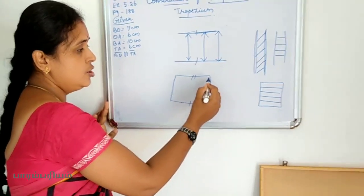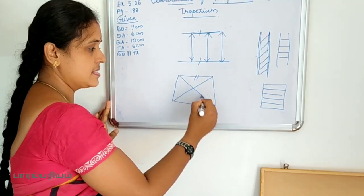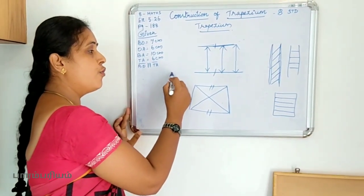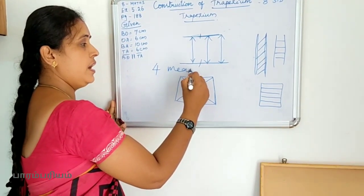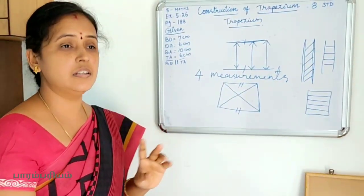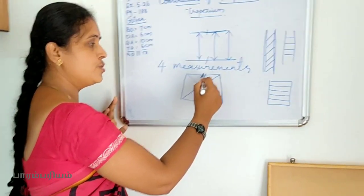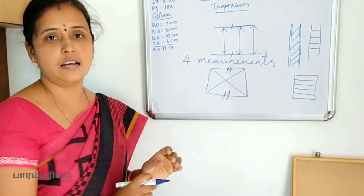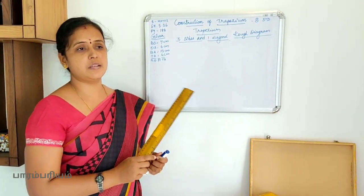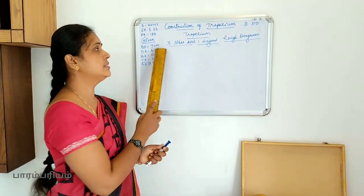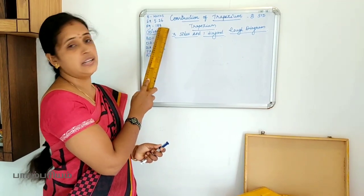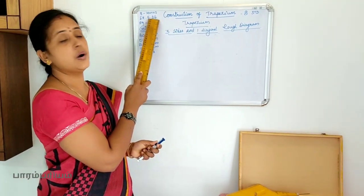A trapezium has two diagonals. In this trapezium construction, we have four measurements: three sides and one diagonal. The page number is 188 and the exercise number is 5.26.